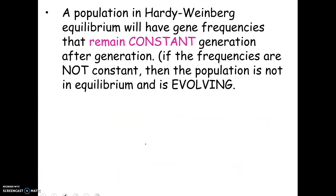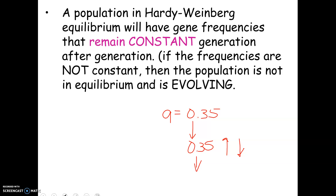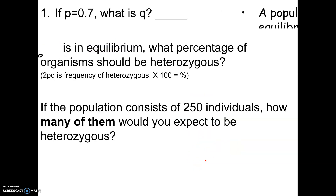Hardy-Weinberg equilibrium says that gene frequencies should remain constant generation after generation. If q is 0.35 and the population is in equilibrium, then 10 years later q should still be 0.35. If it changes — goes up or down — that tells us the population is not in equilibrium and is evolving for that particular allele. So Hardy-Weinberg equilibrium can predict how many individuals should be homozygous or heterozygous, and also tell us whether a population is evolving. If frequencies stay the same, it's in equilibrium; if they're changing, the population is evolving.